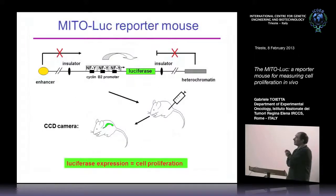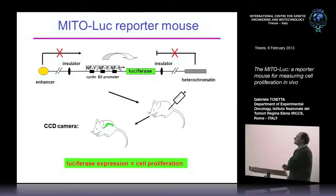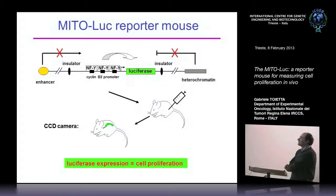This is the expression cassette in which luciferase is under the control of the cyclin B2 promoter, which is dependent on NFY activity. This cassette was isolated by two insulators, and then we generated the animal model in which the expression of luciferase is under the control of this promoter.